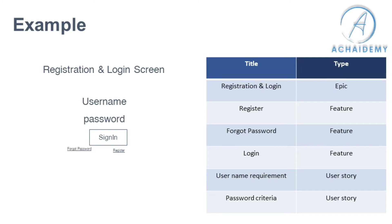Register, forgot password, and login are our features. The username requirement and password criteria will be a story — for example, what will be the criteria for a password: is it eight letters, four letters, alphanumeric? Implementation of that particular password criteria is a story, because it's something you can complete within a sprint. Similarly, implementation of the UI for the username/password with the sign-in button would be another story.